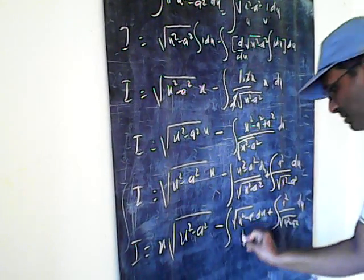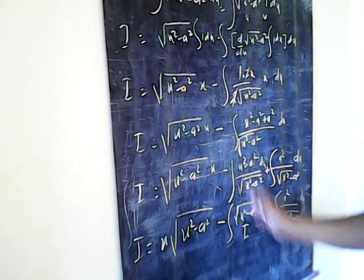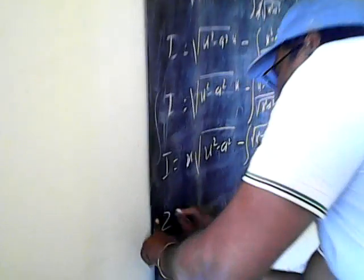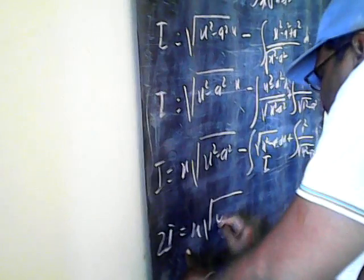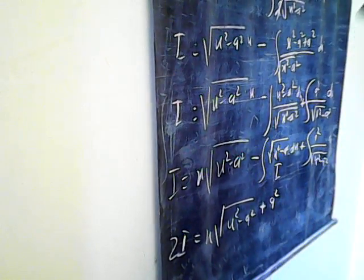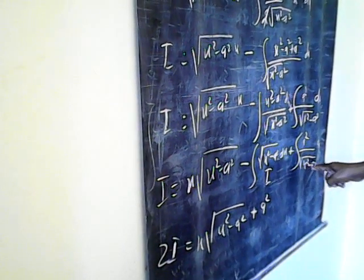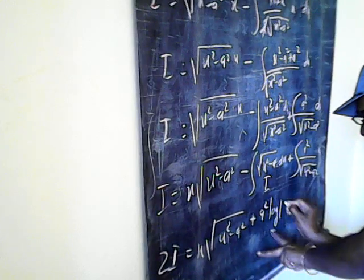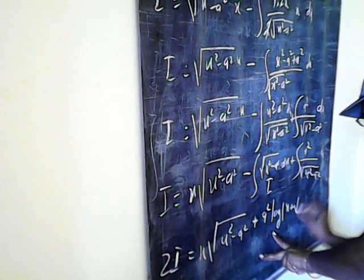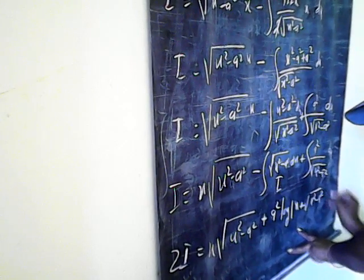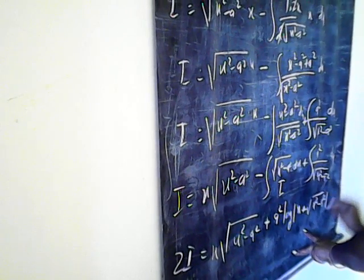Now this means we want I, so this minus I will come over, meaning I plus I gives 2I. So 2I is equal to x times under root x square minus a square, plus a square times 1 upon under root x square minus a square plus C.